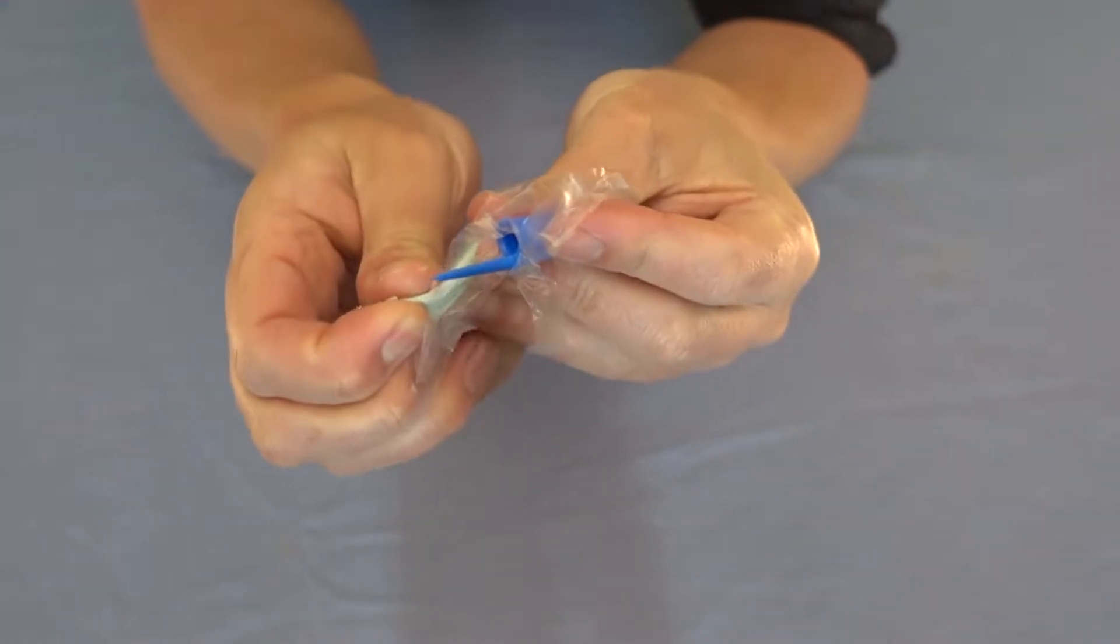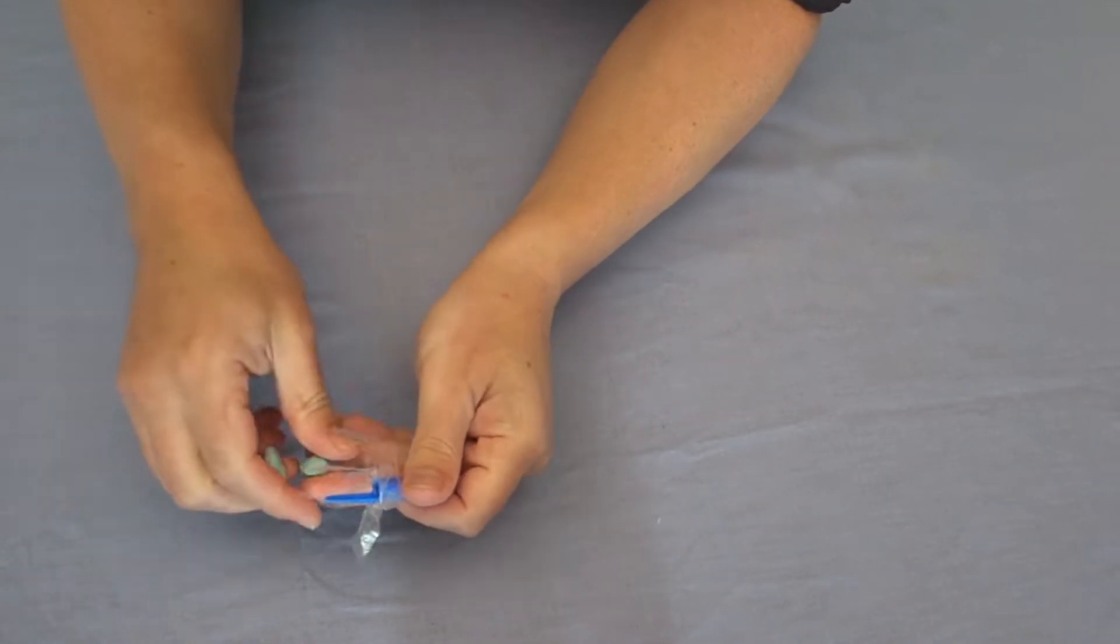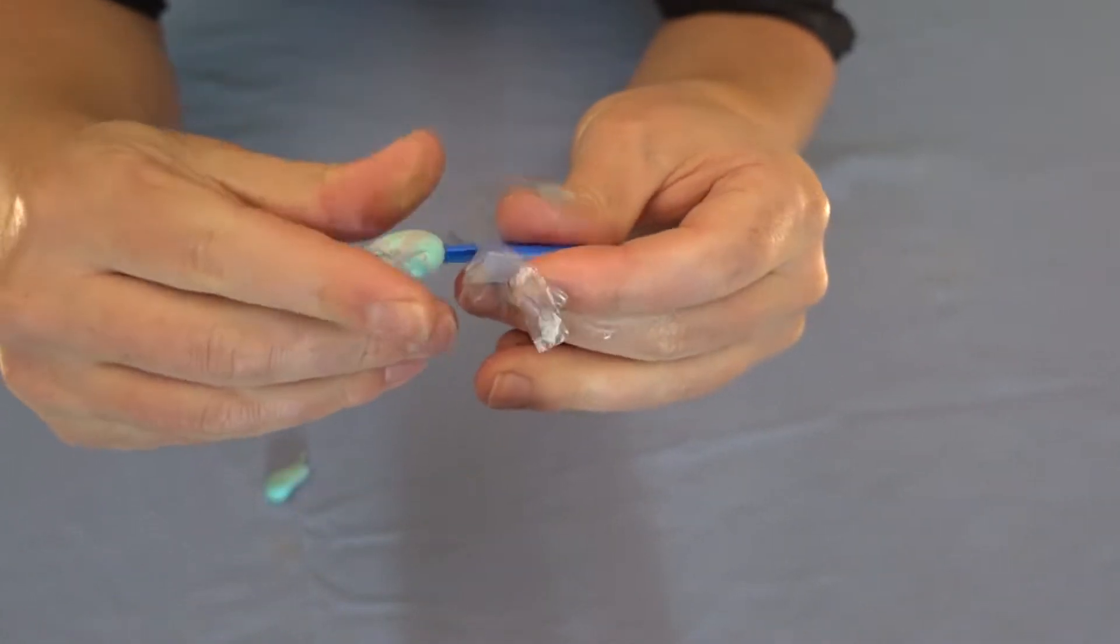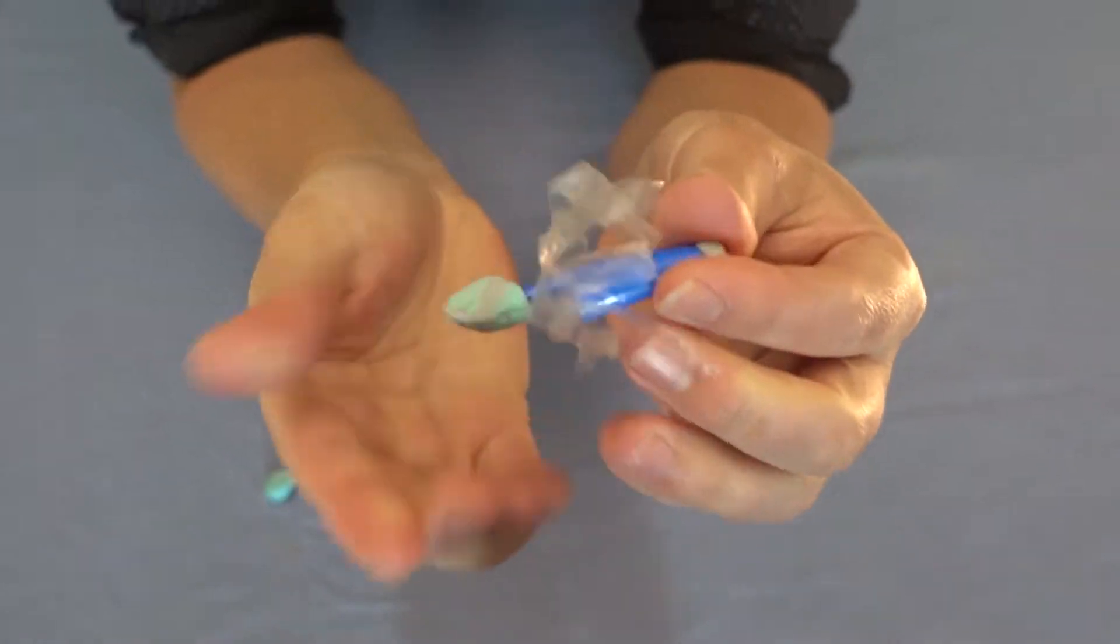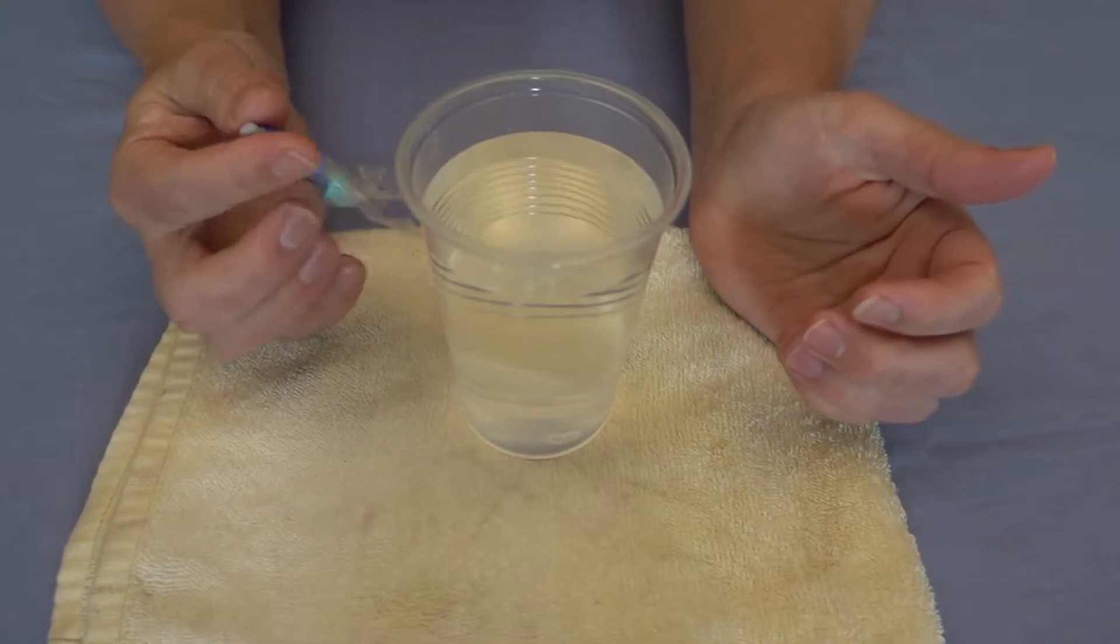For now I'm going to grab a chunk of blue tack and stick it on the bottom of my pen lid. So you should now have a jellyfish that looks a little bit like this.